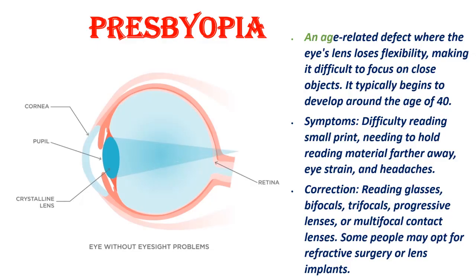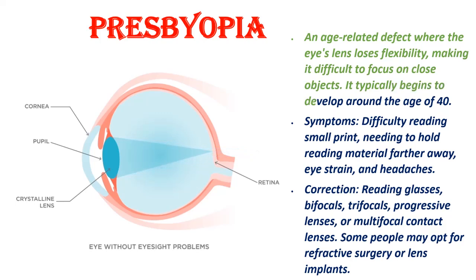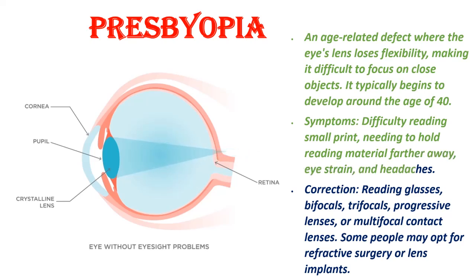Presbyopia: An age-related defect where the eye's lens loses flexibility, making it difficult to focus on close objects. It typically begins to develop around age 40. Symptoms include difficulty reading small print, needing to hold reading material farther away, eye strain, and headaches. It can be corrected using reading glasses, bifocals, trifocals, progressive lenses, or multifocal contact lenses.